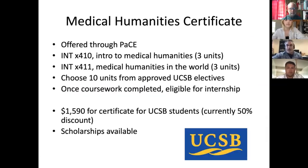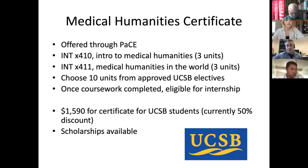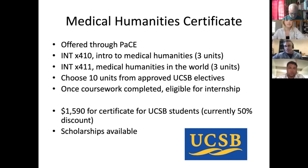To review: the Medical Humanities certificate program can be completed in one year or spread throughout your entire UCSB undergraduate education. It's offered through PACE. There are two required courses — the fall course is Introduction to Medical Humanities and the spring course is Medical Humanities in the World. You then take 10 units from approved UCSB electives, and once coursework is completed, you're eligible to do an optional medical humanities internship.